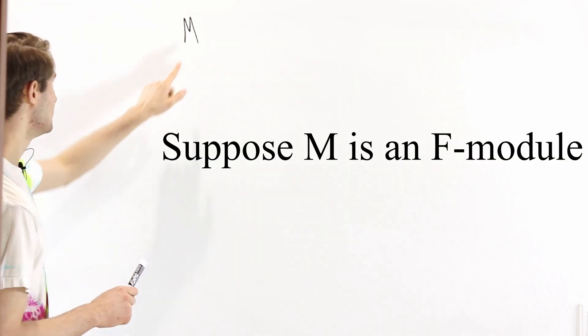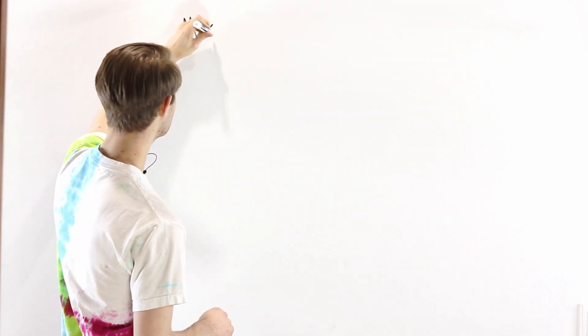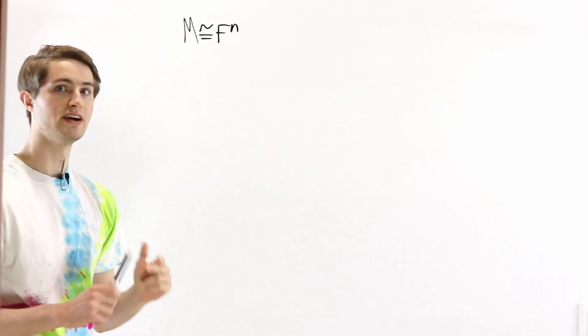In the case where M is finitely generated, we can write it as isomorphic to F to the n, and we call M a vector space.